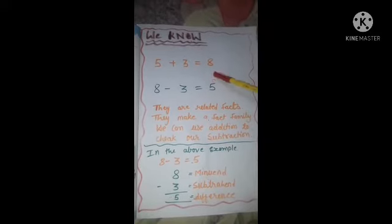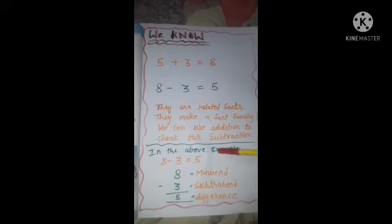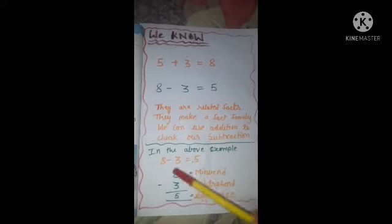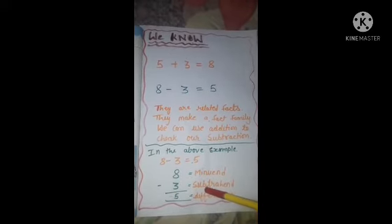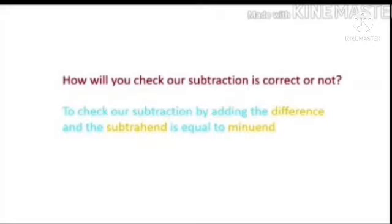In the example 8 minus 3 equals 5: 8 is our minuend, 3 is our subtrahend, and 5 is our difference. To check whether our subtraction is correct, we add the difference and the subtrahend — if the result equals the minuend, the subtraction is correct.